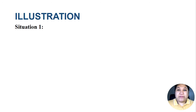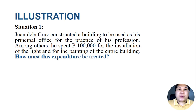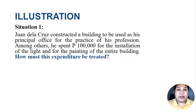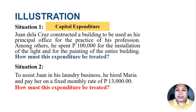To illustrate: in situation one, Juan dela Cruz constructed a building to be used as his principal office. Among other costs, he spent one hundred thousand pesos for the installation of lights and painting the entire building. Since this installation and painting benefits not just one year but several years, and is non-recurring, we treat this as a capital expenditure.